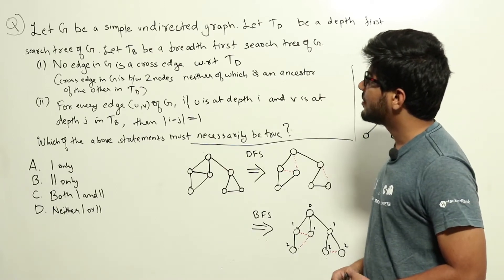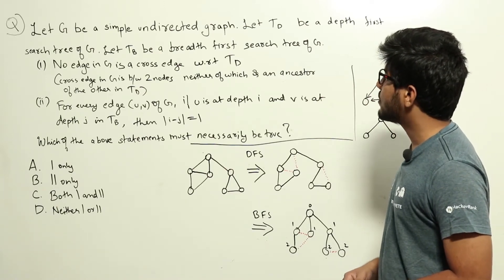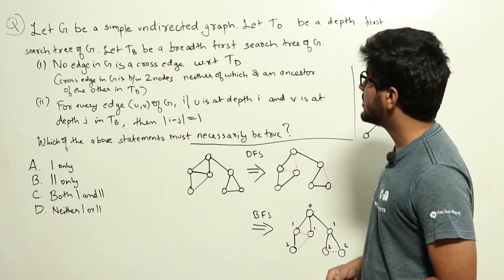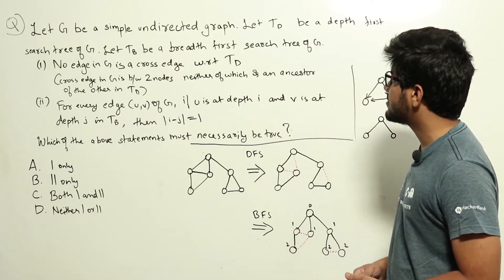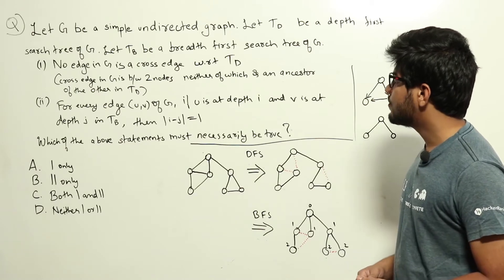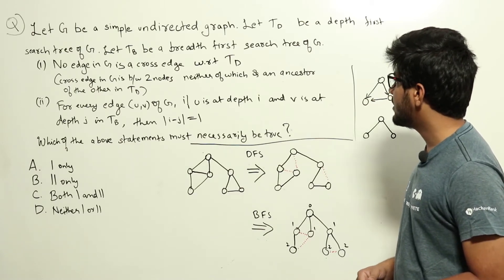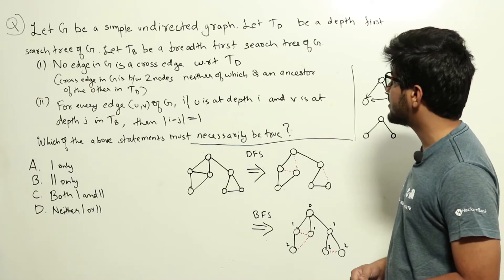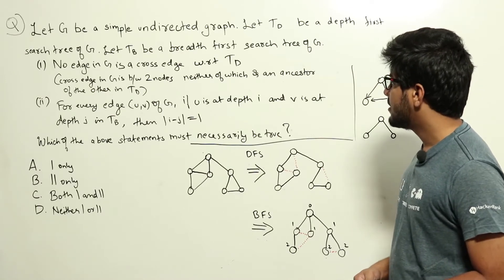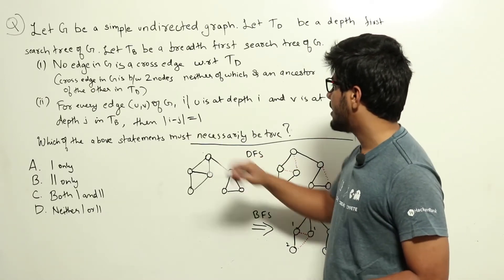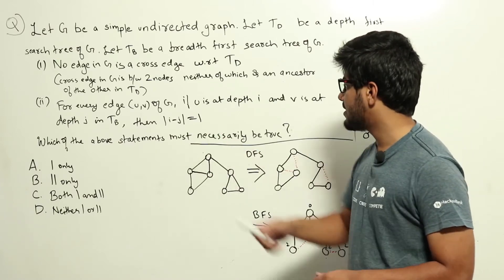Two statements are given. One, no edge in G is a cross edge with respect to Td. Cross edge in G is between two nodes neither of which is an ancestor of the other in Td. Two, for every edge uv of G, if u is at depth i and v is at depth j in Td, then the distance between i and j, modulus of i minus j, equals 1.